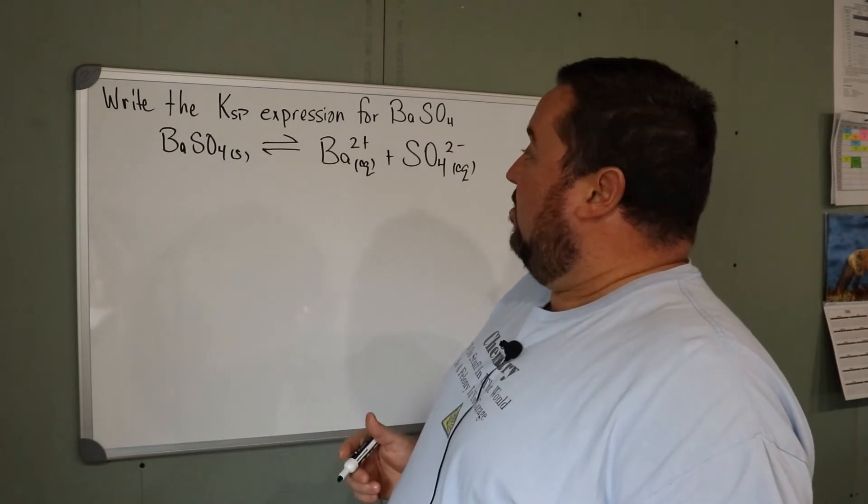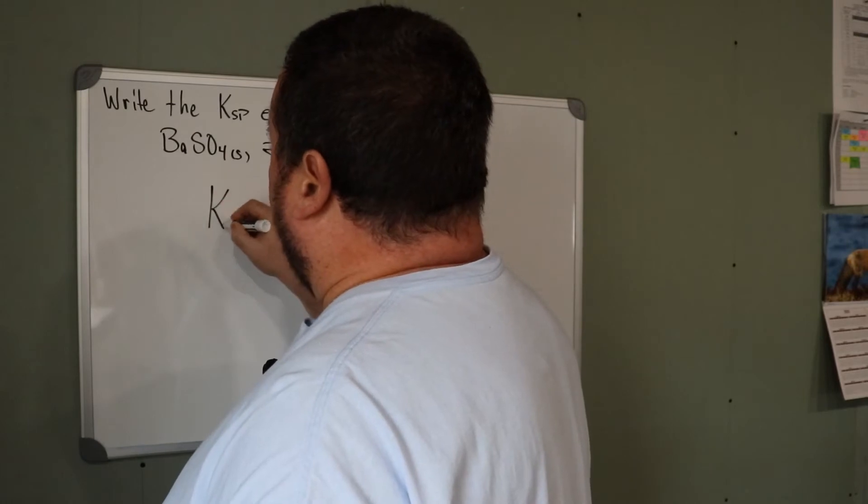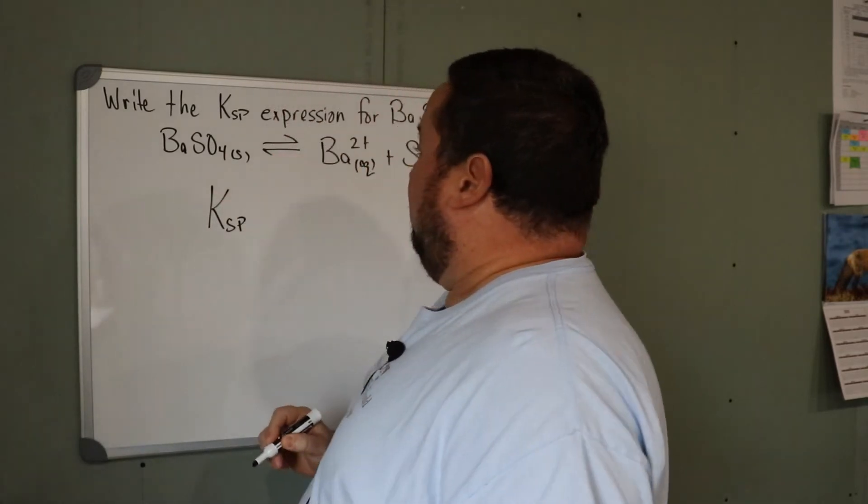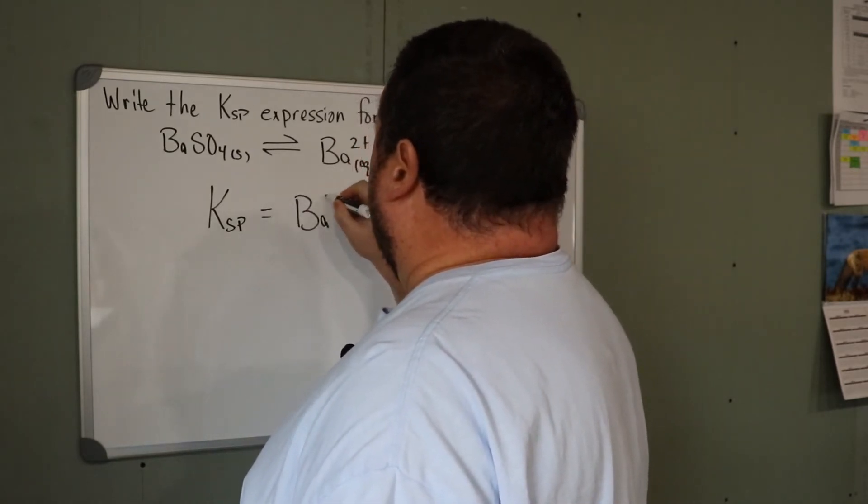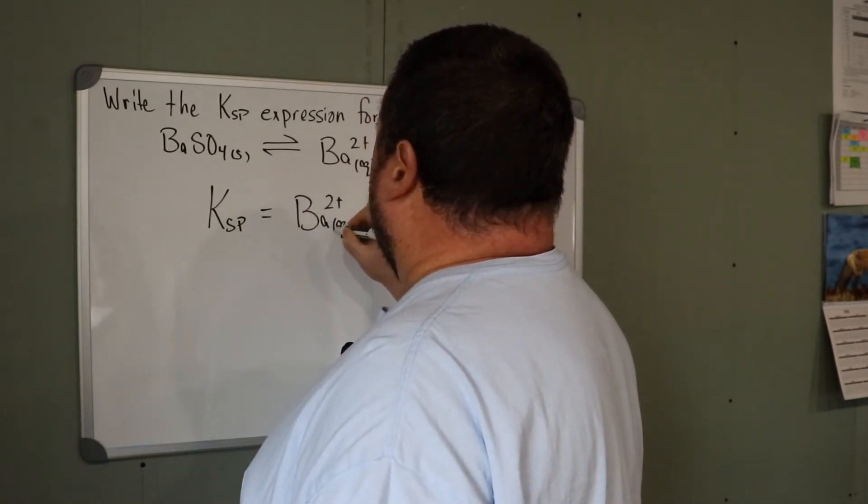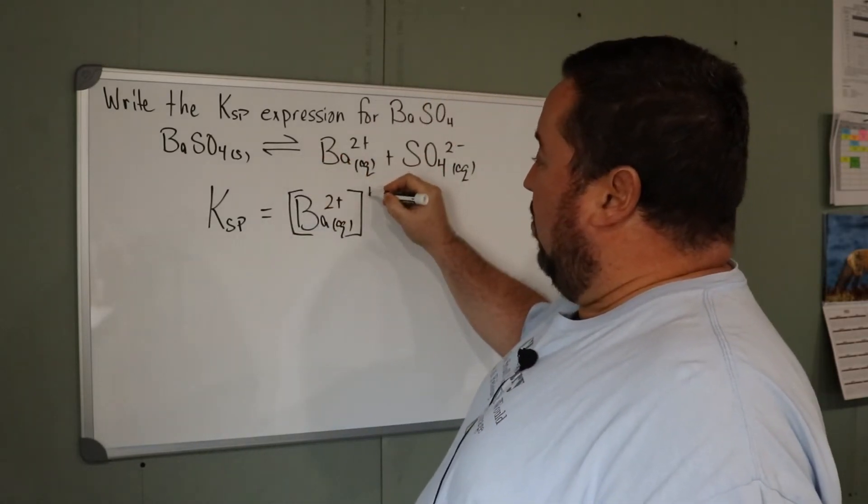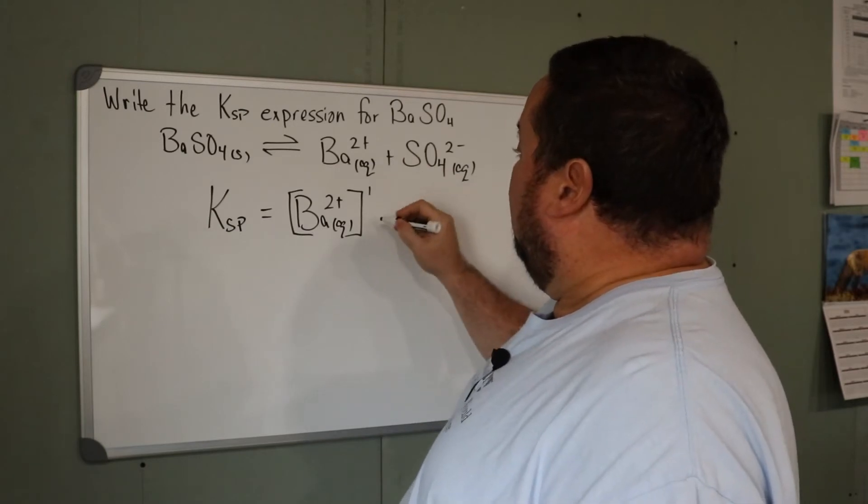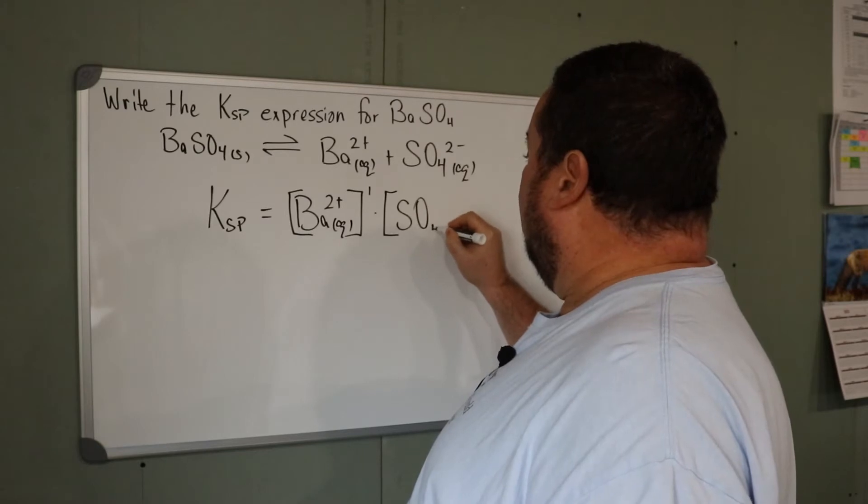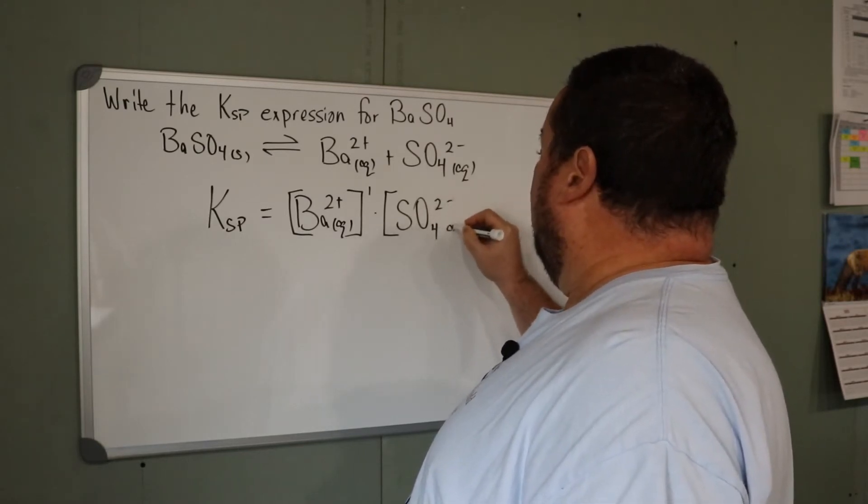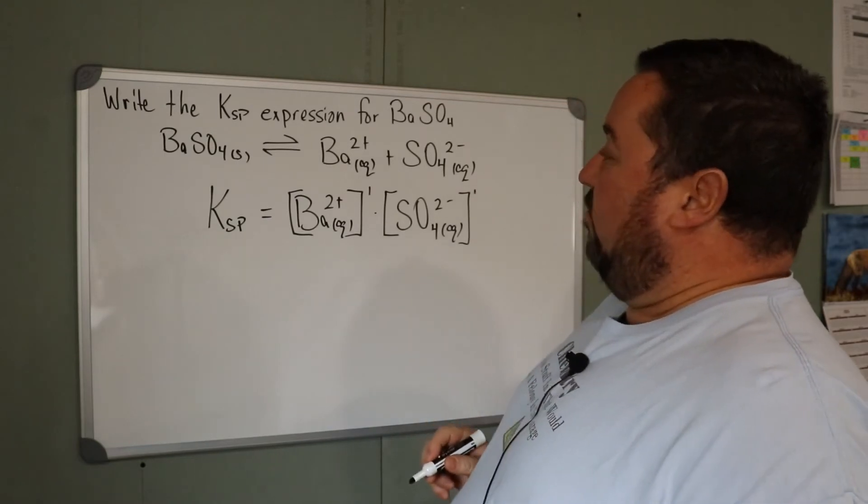In order to write the equilibrium constant, it's always products over reactants. Our first product, barium, concentration raised to the power of its coefficient, which is one, so you don't have to write it, multiplied by the concentration of the other ion, sulfate, which is also raised to the power of one.